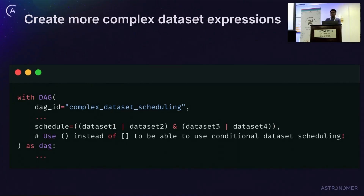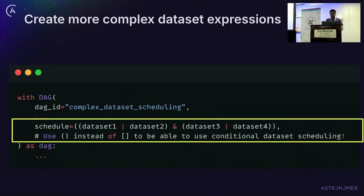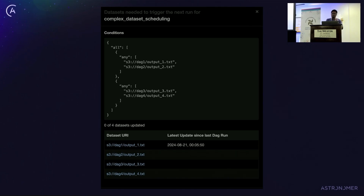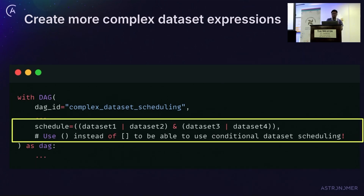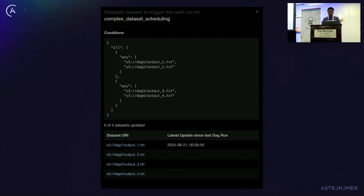You can also create more complex nested dataset structures. For example, you could trigger a DAG whenever either dataset 1 or dataset 2 is updated, OR either dataset 3 or dataset 4 is updated. You can build really complex structures this way — just note that you may need to use parentheses for conditional dataset scheduling. This dataset expression translates in the Airflow UI where AND corresponds to 'all' and OR corresponds to 'any'.